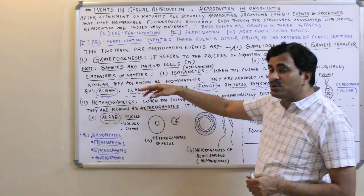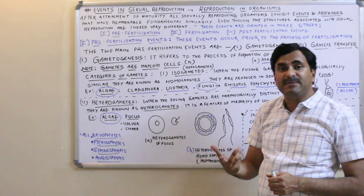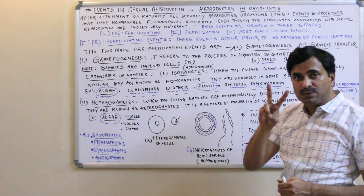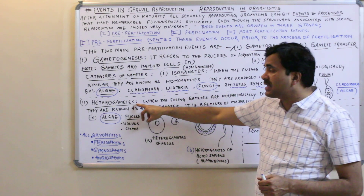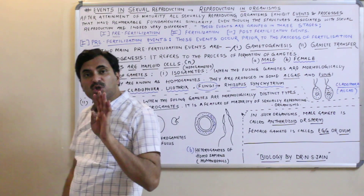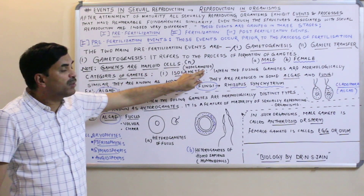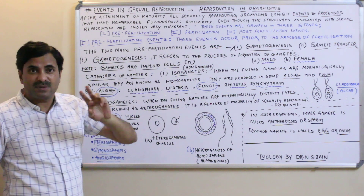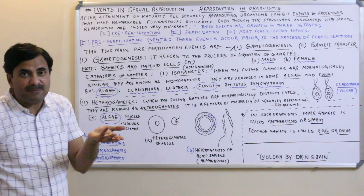If I talk about the categories of gametes, then gametes are categorized into two groups. One is known as isogametes — also called homogametes — and another is known as heterogametes. Iso means same, so homogametes; and heterogametes means different types, hetero means different.